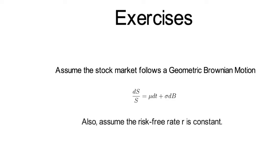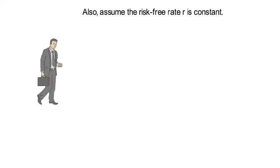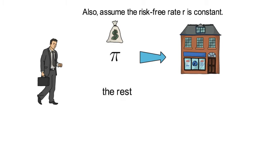Also assume the risk-free rate r is constant. Now assume that an investor invests a constant fraction of his wealth, π, into the stock market and the rest, 1-π, into the risk-free rate.